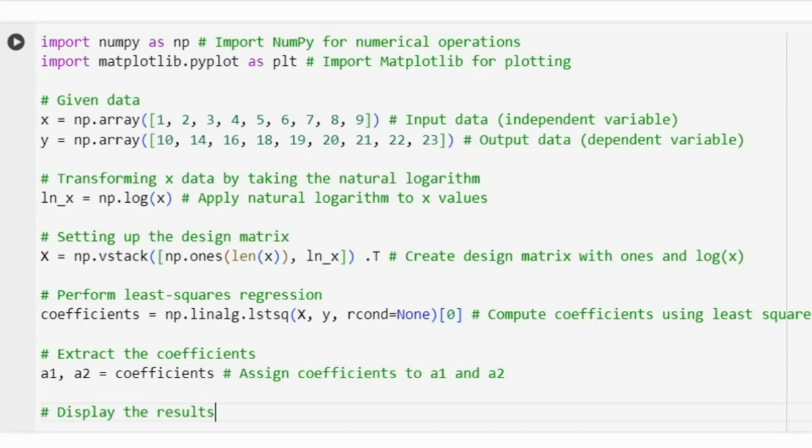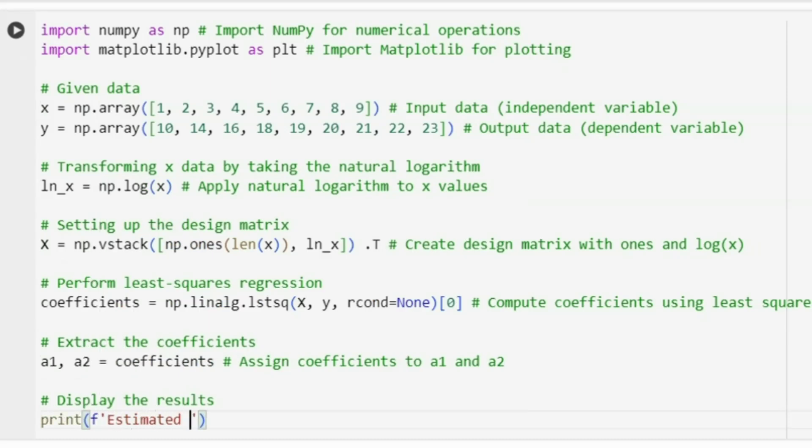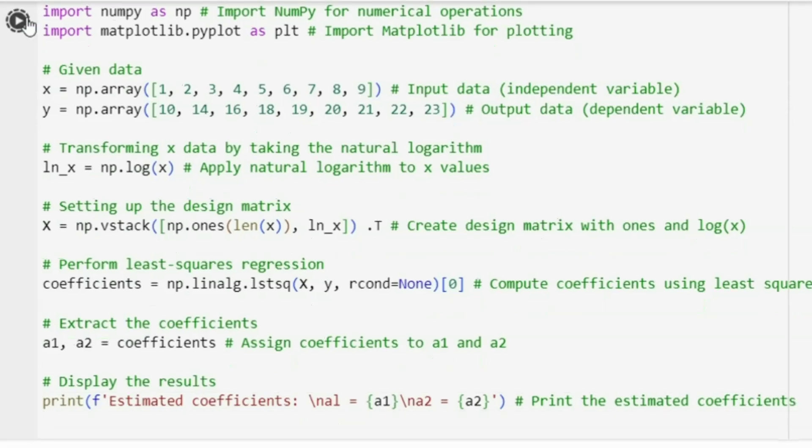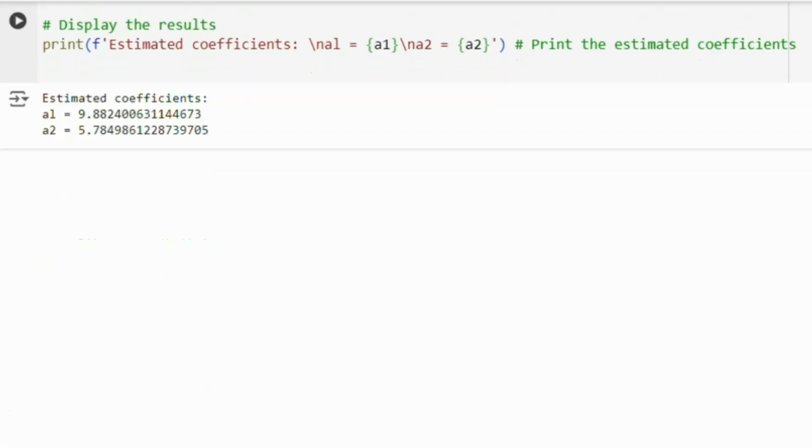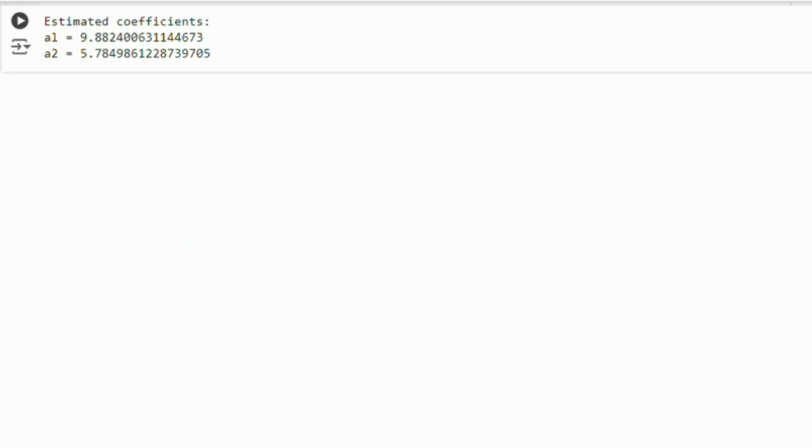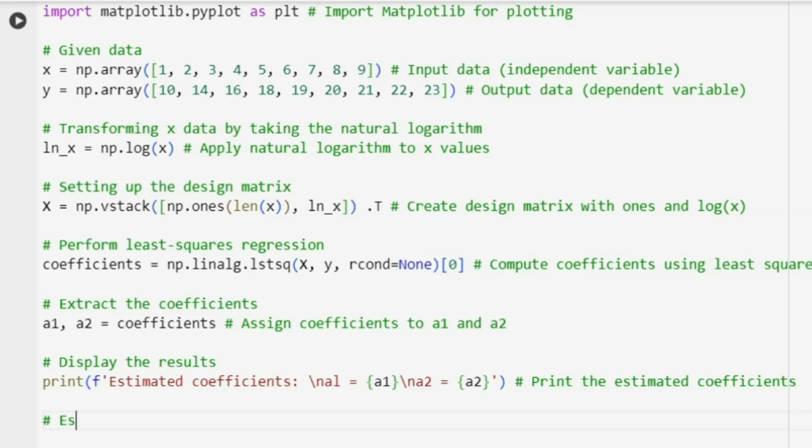We can now display the estimated coefficients to see the results of our regression. Let's run the code to see the coefficients. The coefficients A1 and A2 define the best fit line in the logarithmic space.